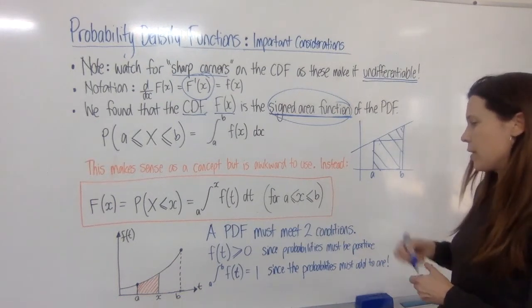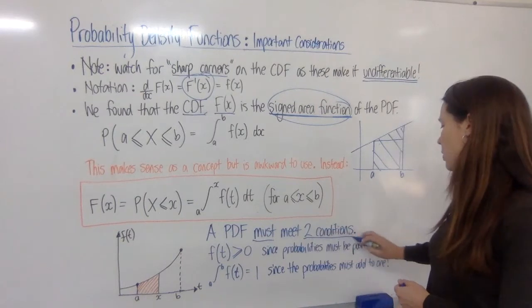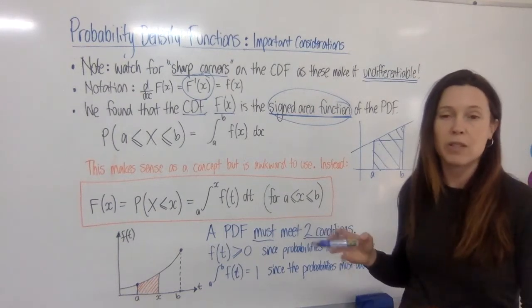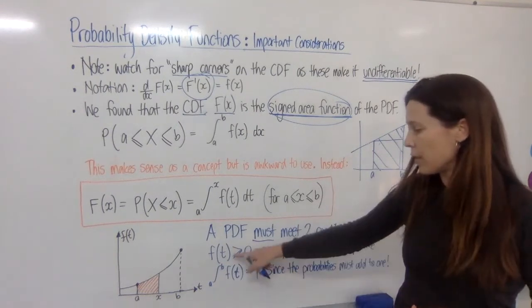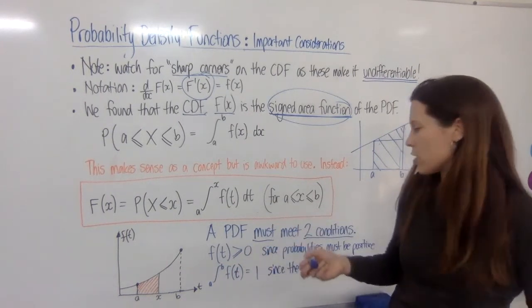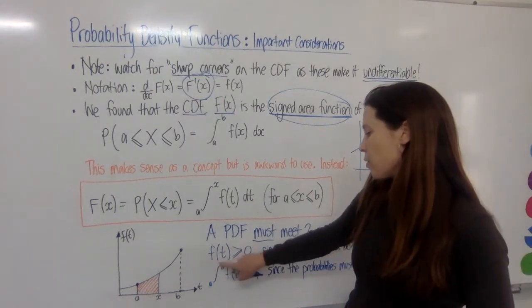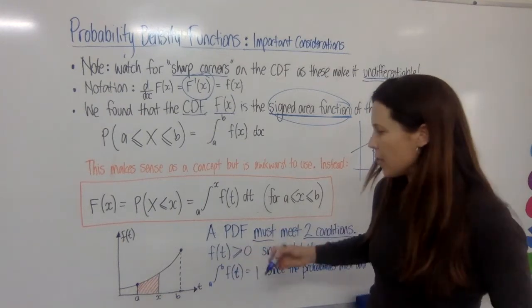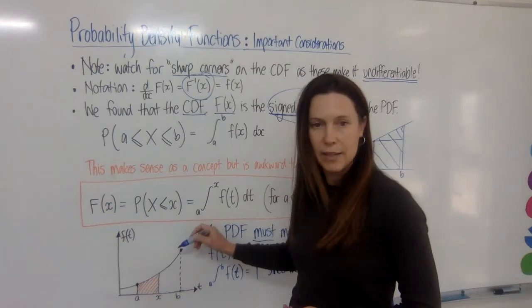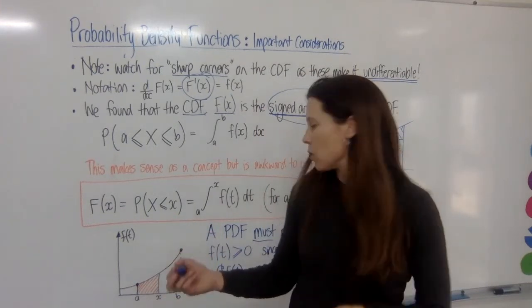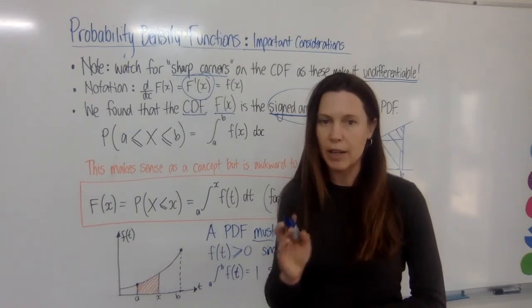Now, super important point. A PDF must meet these two conditions. And these conditions are super important, because a lot of the questions you'll get about PDFs are getting you to prove either one of these conditions or the other to answer some kind of question. So the first one is that the PDF, or the value of the PDF, must be greater than zero. In other words, it has to lie above the horizontal axis. It can't go down here. Now, why is that? Well, because it's listing the probability of any one outcome occurring.